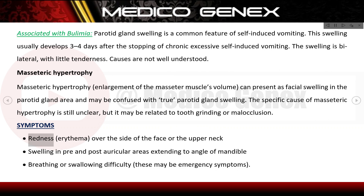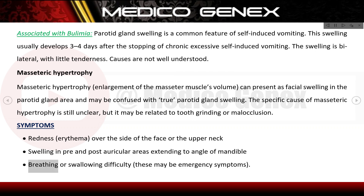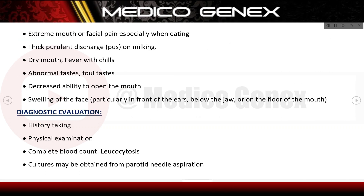Symptoms of parotitis include redness and erythema over the side of the face or upper neck, swelling in pre- and post-auricular areas extending to the angle of the mandible, breathing or swallowing difficulty (which may be emergency symptoms), extreme mouth or facial pain especially when eating, and thick purulent discharge (pus) on milking.